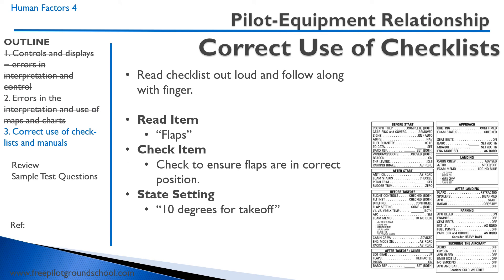You should always use a checklist correctly, especially for critical phases of flight such as before takeoff and before landing. The best way to use a checklist is to read it aloud and follow along with your fingers. For example, you would read the item 'flaps,' check to make sure the flaps are in the correct position, and then state the setting — '10 degrees, set for takeoff.'